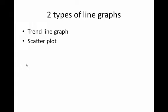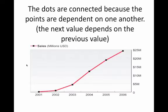Now, on to line graphs. Line graphs have two kinds we are going to see. One of the most important ones — and the ones you will most definitely make during the assessment — is a trend line graph. You will need to know how to make a trend line graph in my class. In a trend line graph, the dots are connected because the points are dependent upon one another, meaning the next value depends on the previous value.